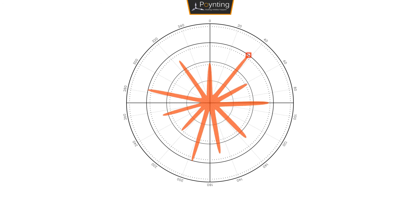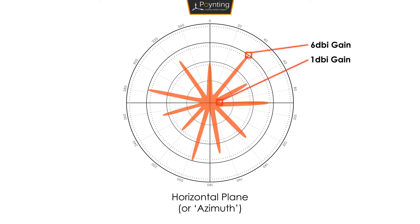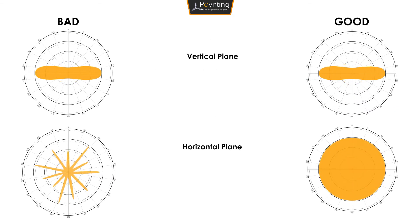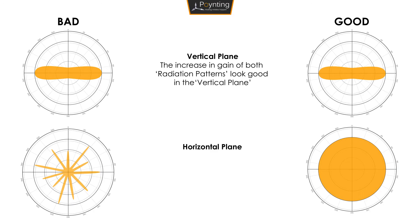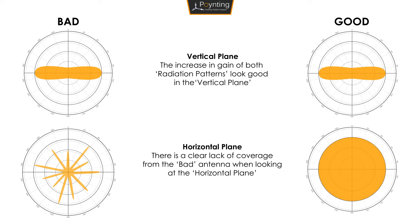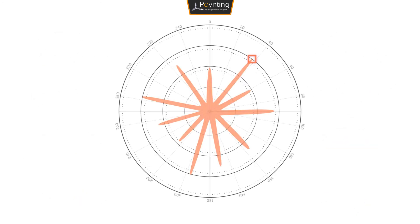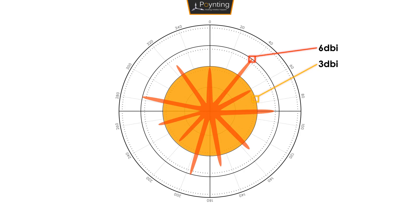Badly designed antennas can show high gain, but in reality offer inconsistent coverage. A good antenna needs more than just high gain — it needs consistency. What seems to be a good antenna when viewing the vertical plane can be a very bad antenna when comparing it to the horizontal plane. This is an example of a poorly designed antenna with seemingly high gain that covers less than a well-designed antenna with lower gain.